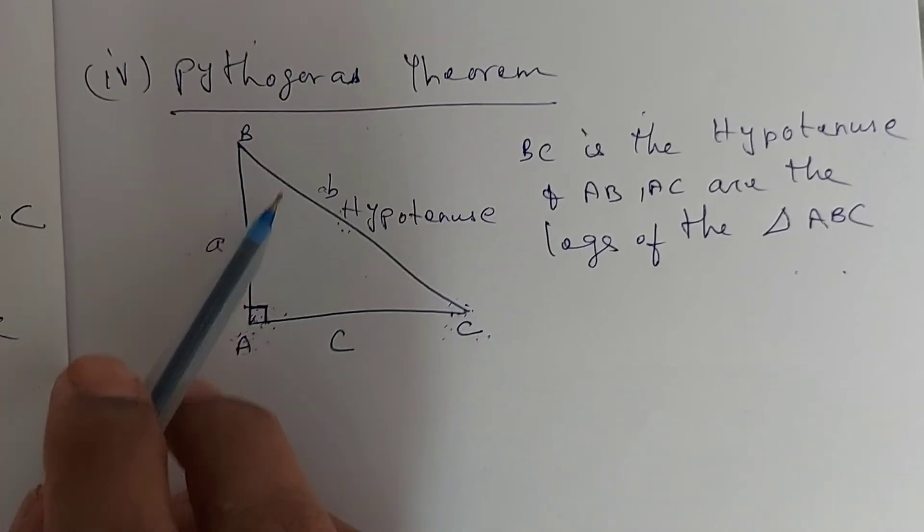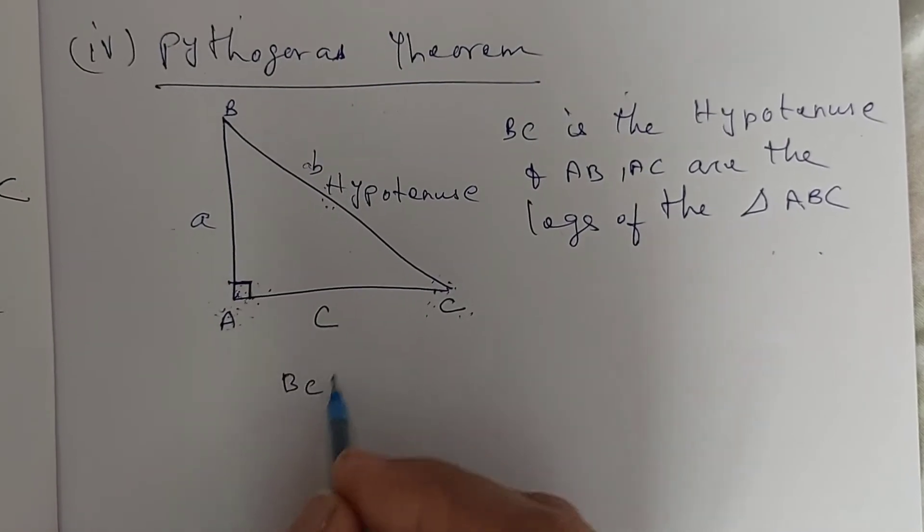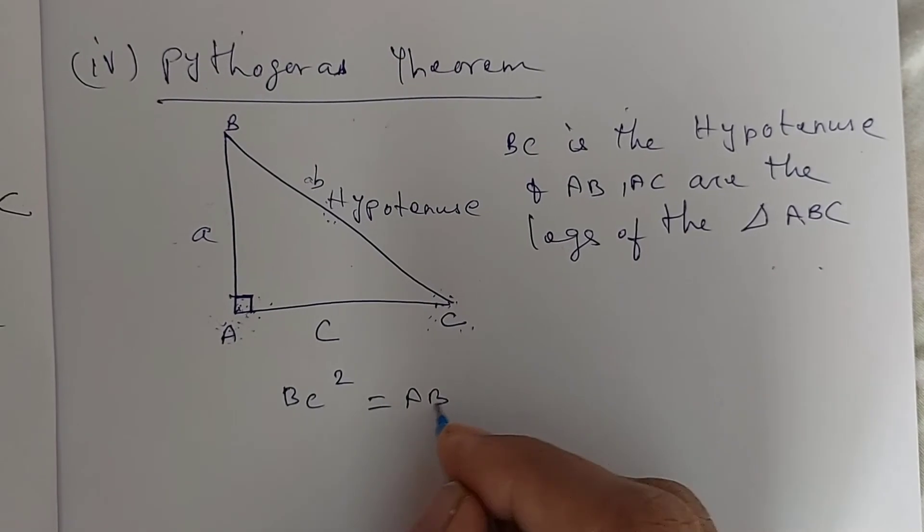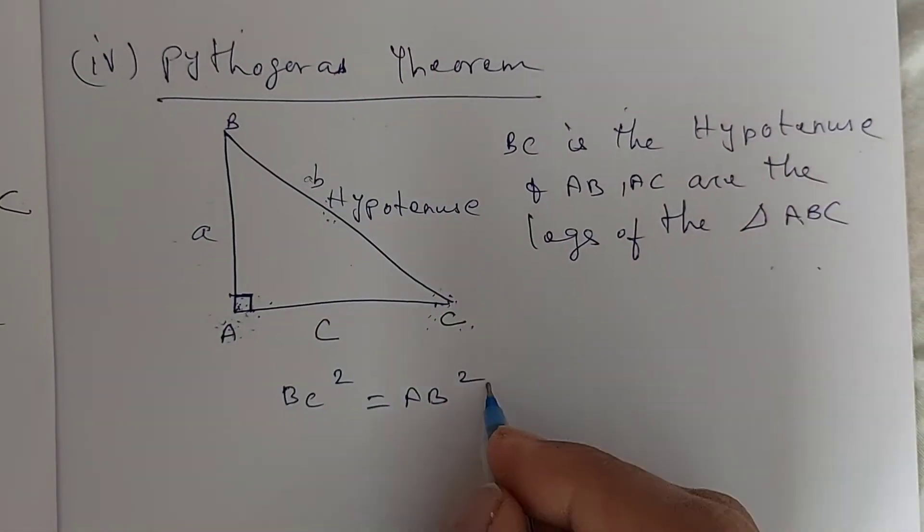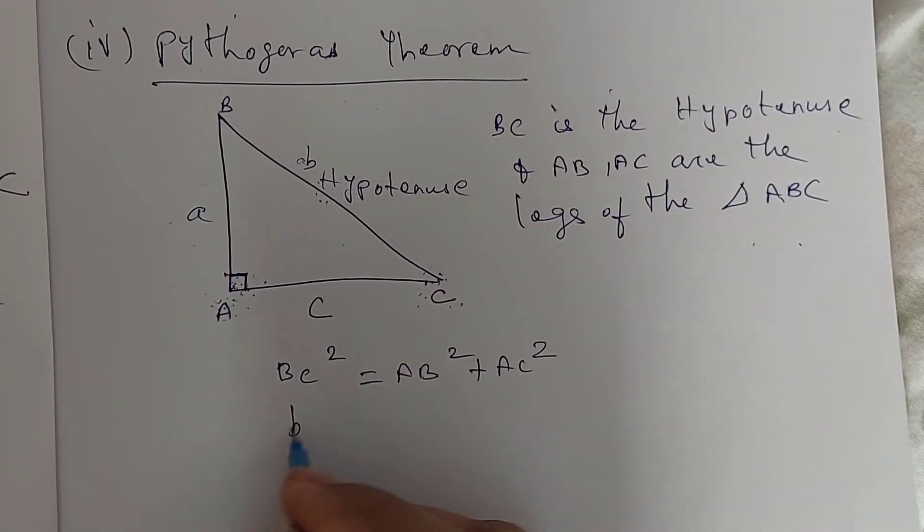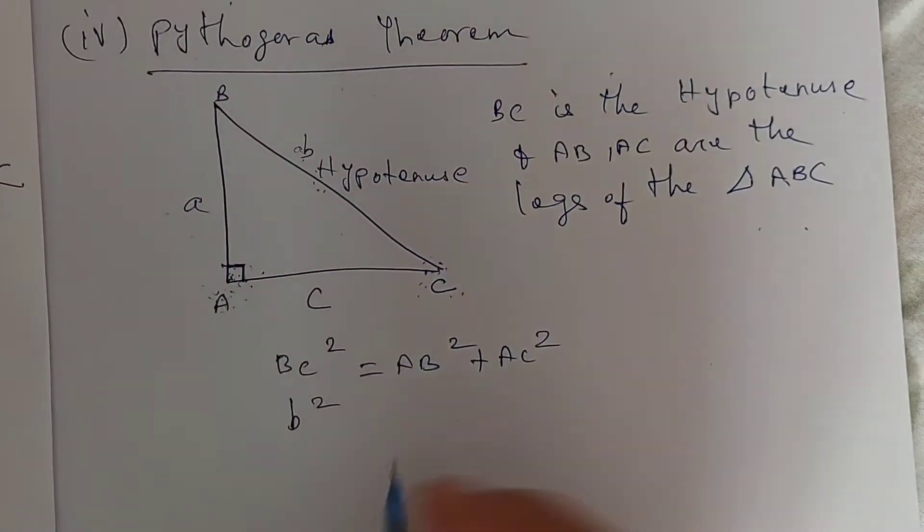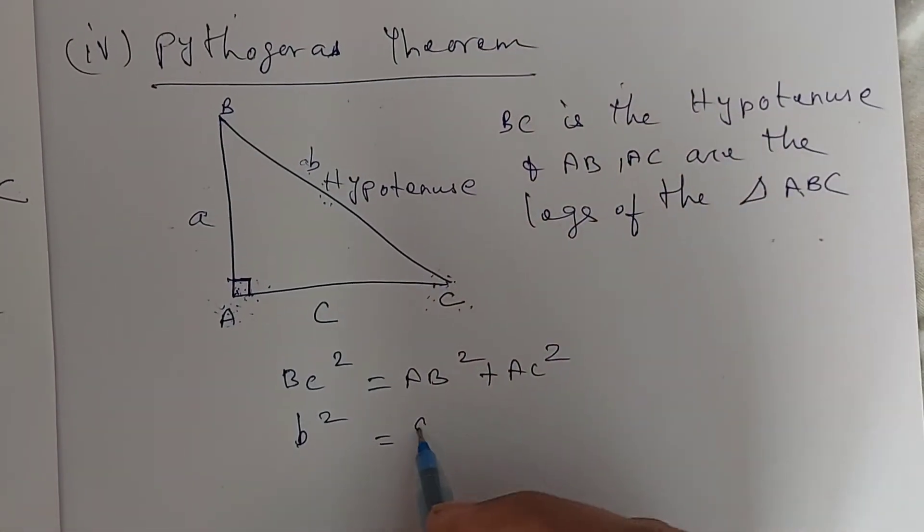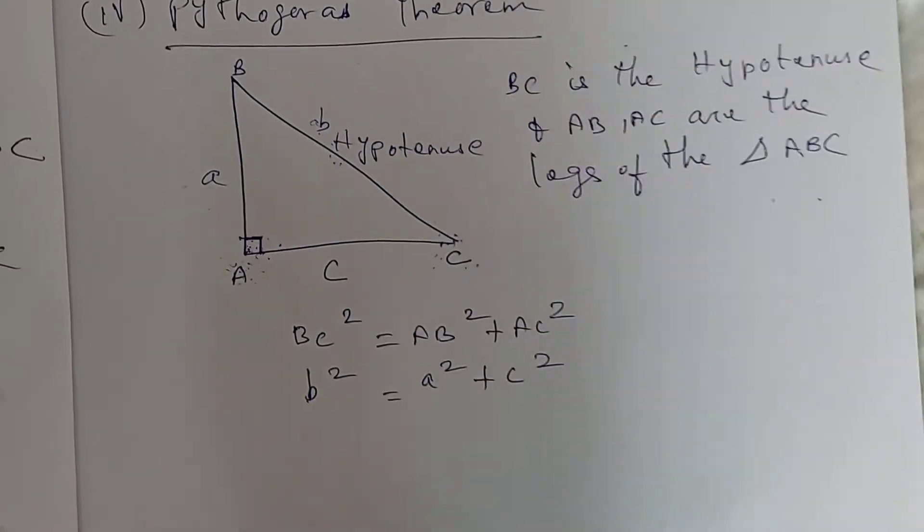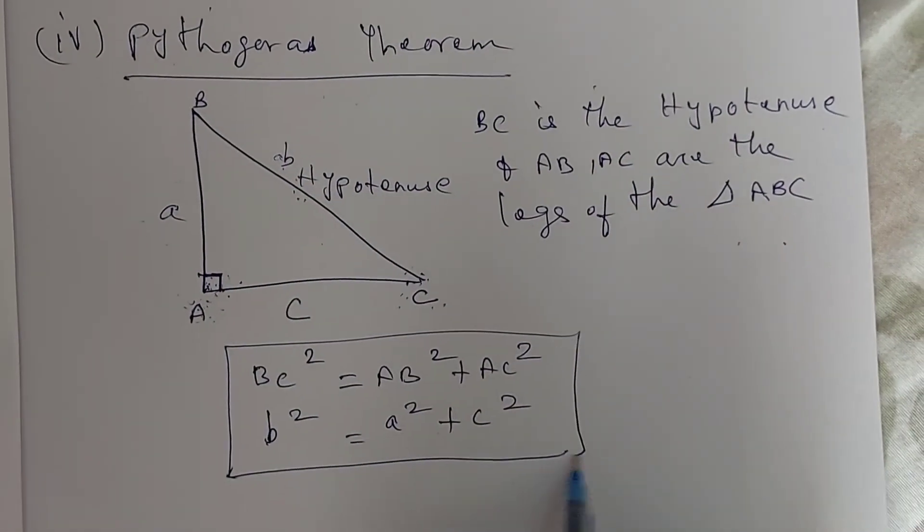Here then what Pythagoras theorem says that is BC squared is equal to what are the two sides? AB squared plus AC squared. We have given the side as B here for AB, C. So, B squared is equal to A squared plus C squared. So, this is the Pythagoras theorem.